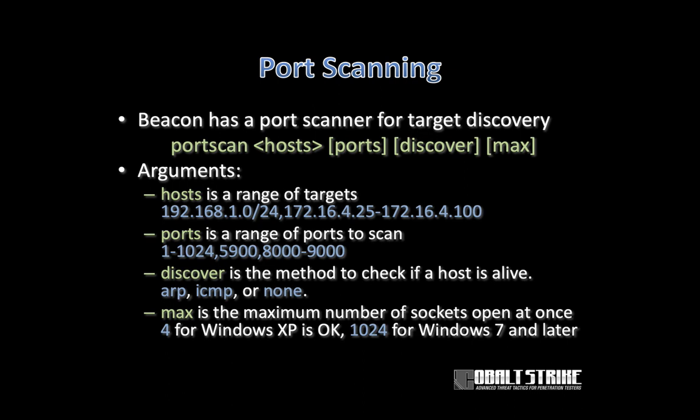Same with ports — you can specify a range of ports to scan and separate multiple ranges by commas. The discover argument is the method to check if the host is alive. If you specify ARP, the port scan tool will try to look up the MAC address of the target before scanning. ICMP will use an ICMP ping to check if the host is alive, or none will skip this process and scan ports for each possible target as if it is alive.